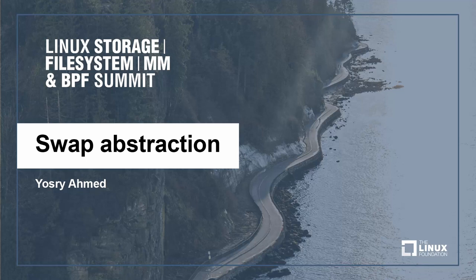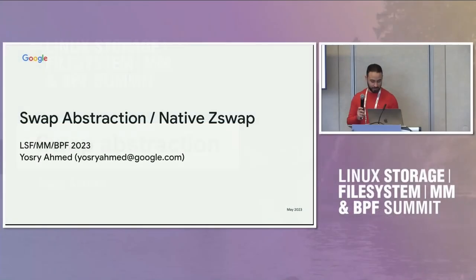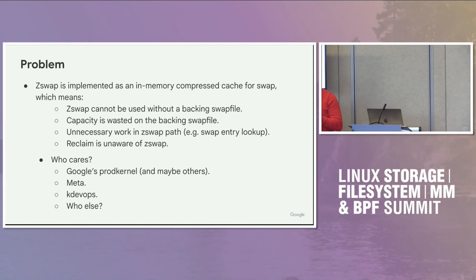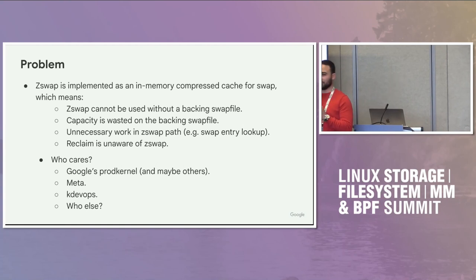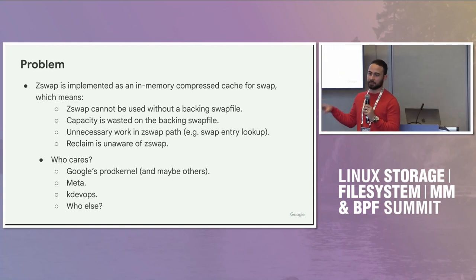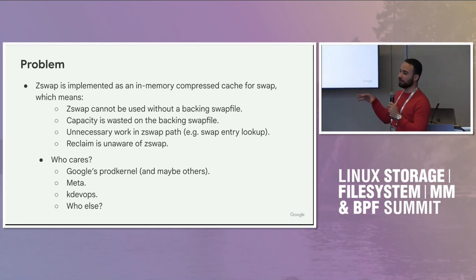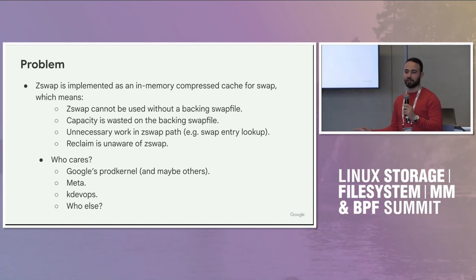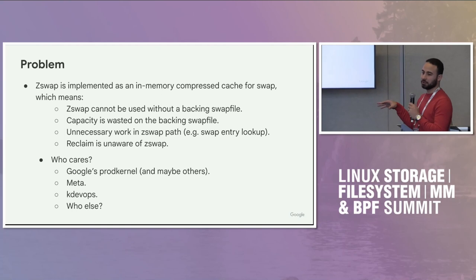The next topic is swap abstraction or native ZSwap. The problem is that the current implementation of ZSwap is that ZSwap is just an in-memory compressed cache for swap. The way it is implemented is that it's very conveniently placed at the very last step before swapping out or swapping in a page, so that the rest of MM doesn't have to be aware of it. This is convenient from an implementation point of view, but it also has a few problems.